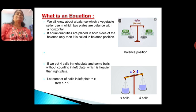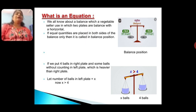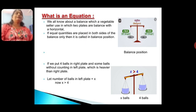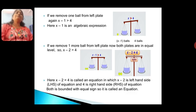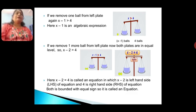If we put four balls in the right plate and some balls without counting in the left plate, which is heavier than the right plate — let the number of balls in the left plate be x, because we don't know how many balls are in the left plate. The left plate is heavier than the right, therefore x is greater than 4. If we remove one ball from the left plate, the number of balls in the left plate is x minus 1, so x minus 1 is still greater than 4. Here, x minus 1 is an algebraic expression because x is a variable.